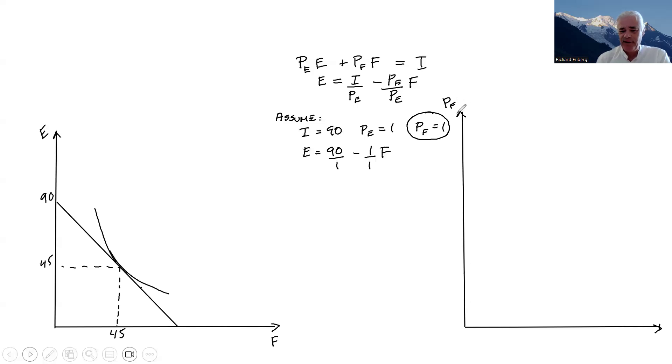So let's draw the demand curve here. We have an axis, vertical axis PF. Sorry, this is getting a bit messy. And we have QF, the number of units of food here. So we have, at the price of one, we had 45 units of food being demanded. Okay, so that's one point on a demand curve. So let's continue. Let's look at another one. One point does not make a curve.